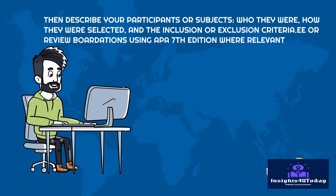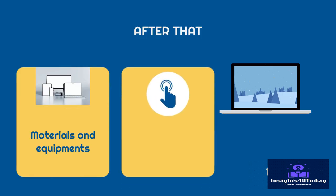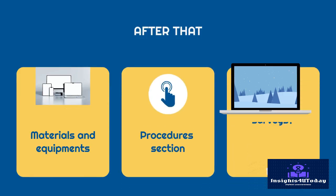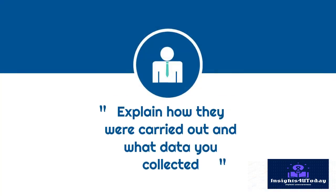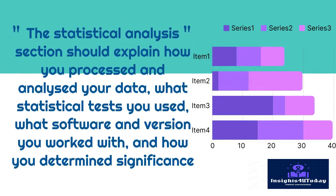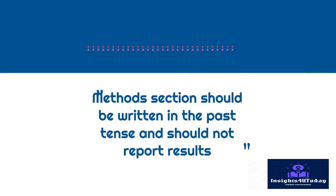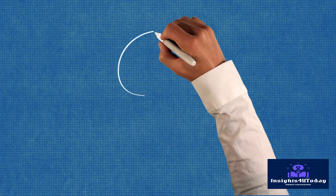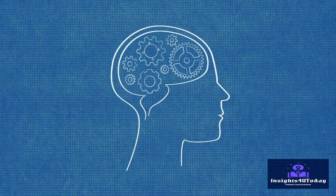Include your ethics statement to show that your study was approved by the right committee or review board. Then describe your participants or subjects — who they were, how they were selected, and the inclusion or exclusion criteria. After that, explain the equipment or materials you used. The study procedures section should describe exactly what you did, step by step. If there were interventions, treatments, or surveys, explain how they were carried out and what data you collected. The statistical analysis section should explain how you processed and analyzed your data, what statistical tests you used, what software and version you worked with, and how you determined significance. Remember, the methods section should be written in the past tense and should not report results. When you use AI to write this part, prompt it like this.